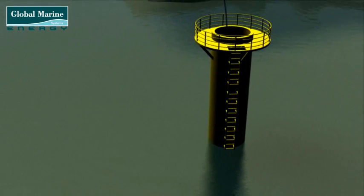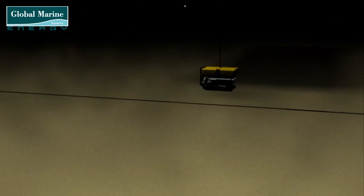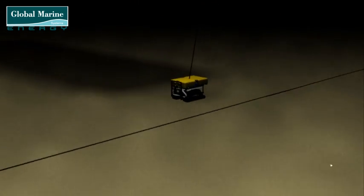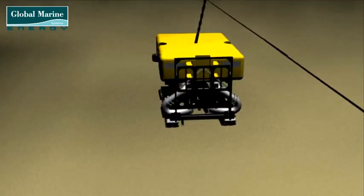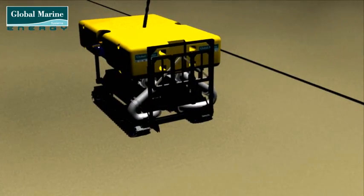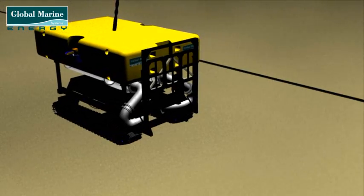A larger work-class ROV, such as the Excalibur, is deployed to bury the cable into the seabed. On board the Excalibur, all systems are checked and the tracking system is zeroed to the environmental conditions it finds in the area. This is done by the ROV extending its TSS array and calibrating away from the cable.